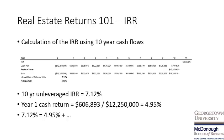Our partitioning of the internal rate of return first begins with the year one cash return, which in this case is 4.95%.